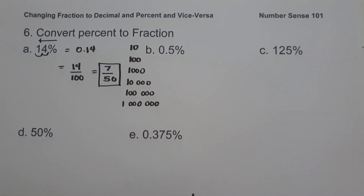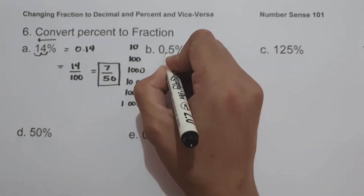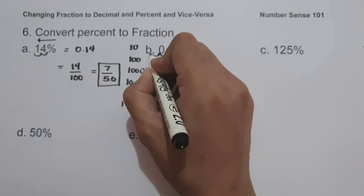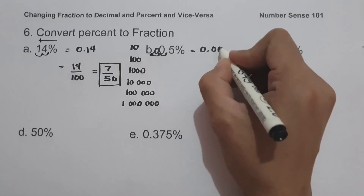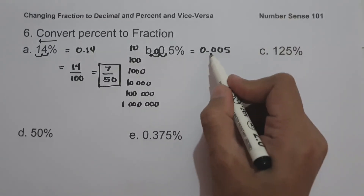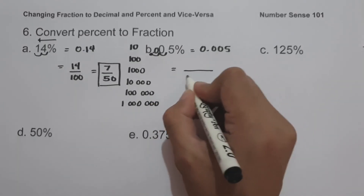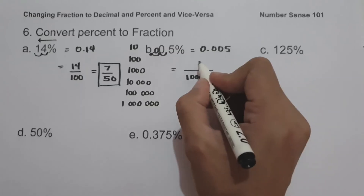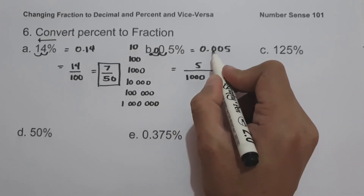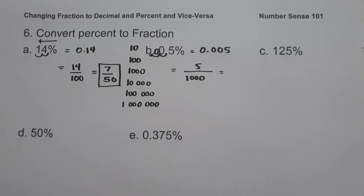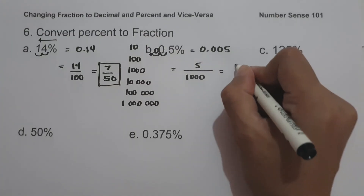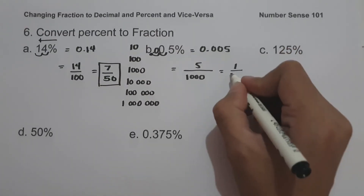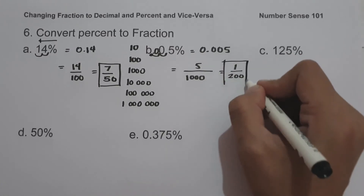On letter B, we have 0.5%. Moving two decimal places from right to left gives us 0.005. Since we have three decimal places, we use 1,000 as our denominator, giving 5 over 1,000. The greatest common factor between 5 and 1,000 is 5. So 5 ÷ 5 = 1 and 1,000 ÷ 5 = 200. Our answer is 1 over 200.